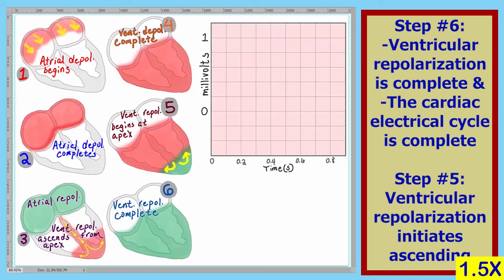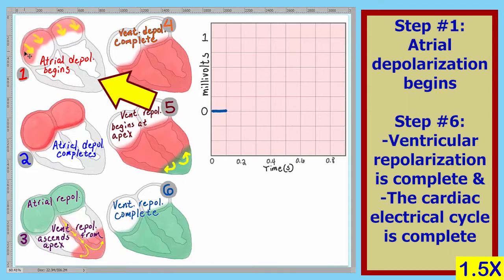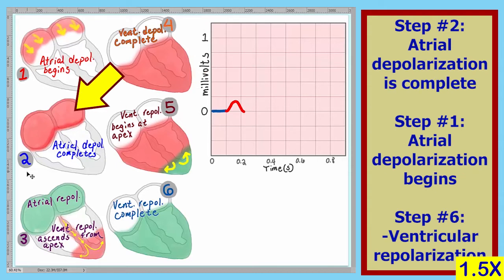Now we will take the electrical events that are on the heart and represent them on the graph. Rather than showing event number one first, we will show the completion of the cycle first, and that is represented with number six. Shown here is the electrical activity for the completion of ventricular repolarization. Now let's represent number one — here we have a wave of atrial depolarization in the direction of the apex. In step number two, we have completion of atrial depolarization.